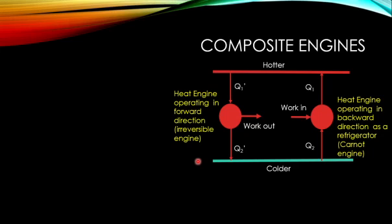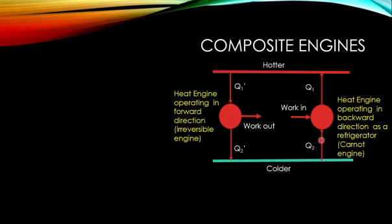We will now look at different kinds of Carnot engines, like composite engines. In this picture, you can see there is an irreversible engine operating in a forward direction — it takes heat Q1 prime from the hotter reservoir, gives out some work, and gives the remaining heat energy to the colder reservoir. The work given out by the irreversible engine is taken up by a Carnot engine, which reverses the process — heat energy is taken from the colder reservoir and transferred to the hotter reservoir. That is how a Carnot engine working backward affects the system.